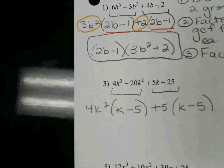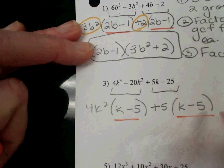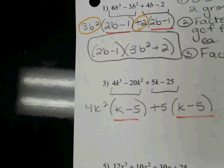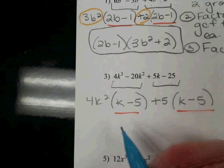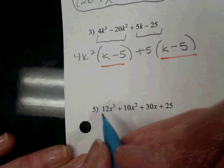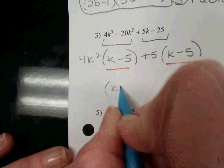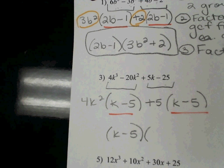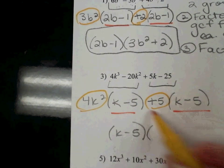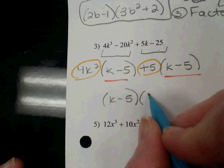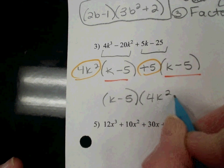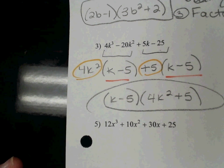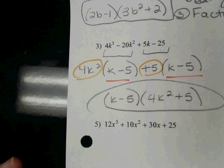And again, that crazy thing happened, k minus 5 appears in both. So if that doesn't happen, does that mean you got it wrong? Something went wrong. So the k minus 5, that's what we factor out in front. And then my leftovers go in that next group, 4k² plus 5. There it is, done.